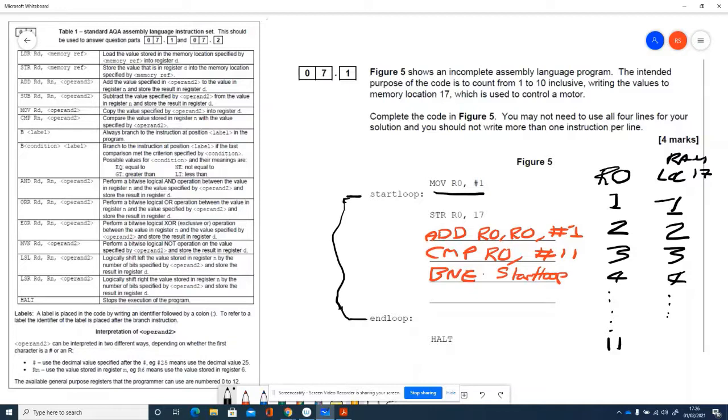We're going to be comparing r0 with 11 branch if not equal to well it is equal to now so we're ending the loop and halting so we stop there. So we end up with the biggest number in ram in location 17 being 10.